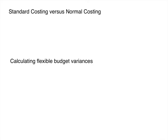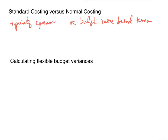Let's first talk about the difference between standard costing versus normal costing. Normal costing is where we take an estimated rate that we calculated and use that rate to allocate overhead — these are more broad, budgeted numbers. Versus in standard costing, these numbers are typically expressed on a per unit basis.